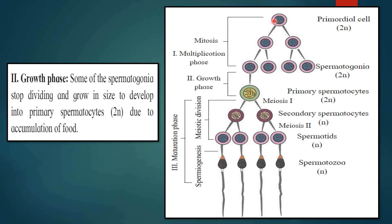In the diagram you can see the primordial cell, which is diploid. It undergoes mitosis resulting in two cells — this phase is called the multiplication phase, where these two cells again undergo mitosis to form spermatogonia, which are also diploid. Once the multiplication phase is over, it enters the growth phase where it acts as a primary spermatocyte, which is diploid.